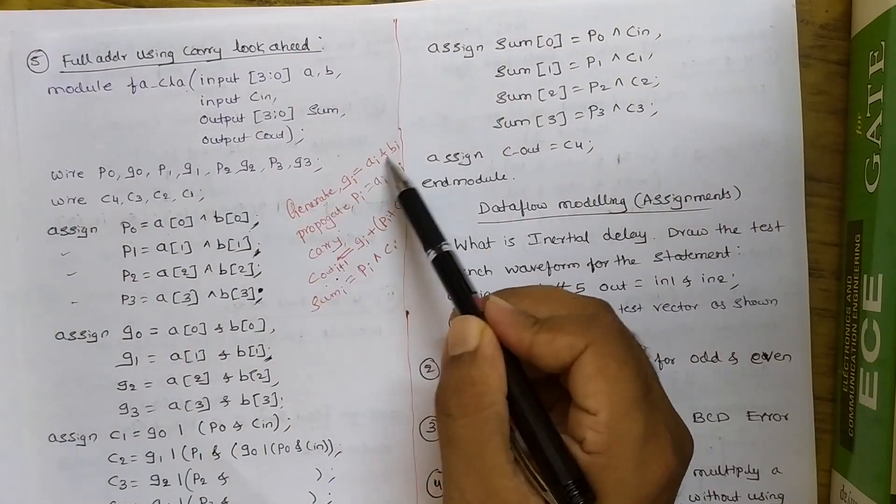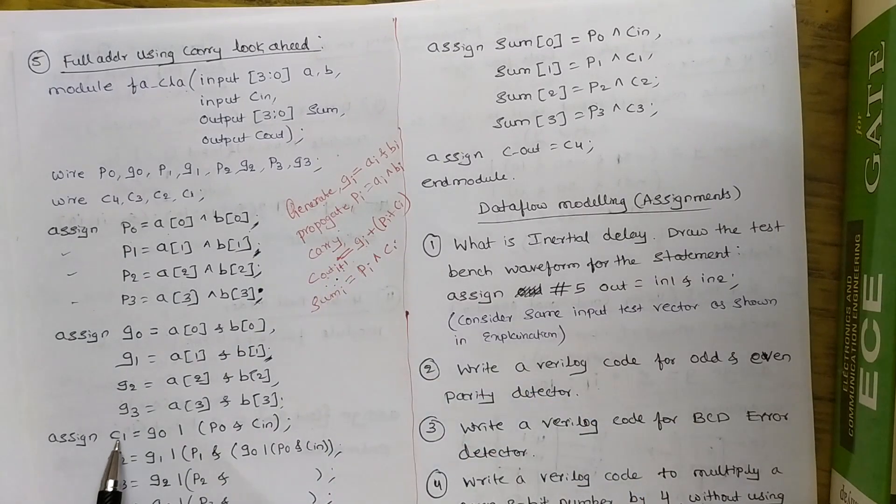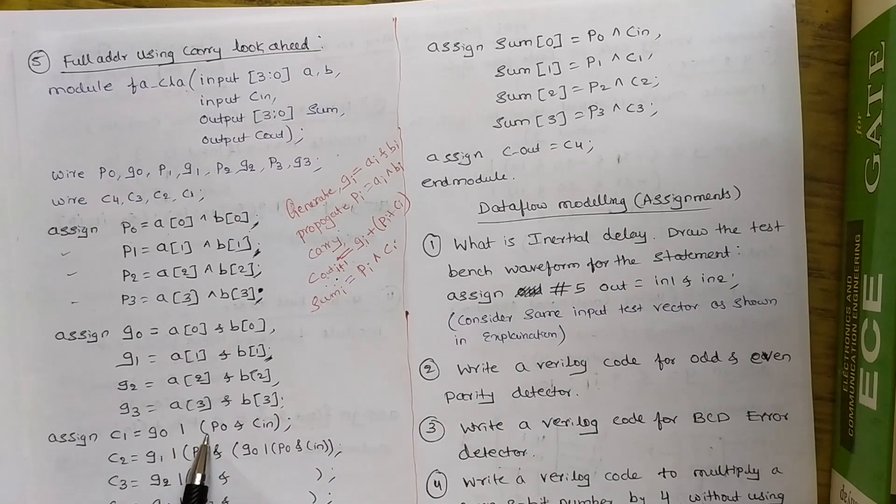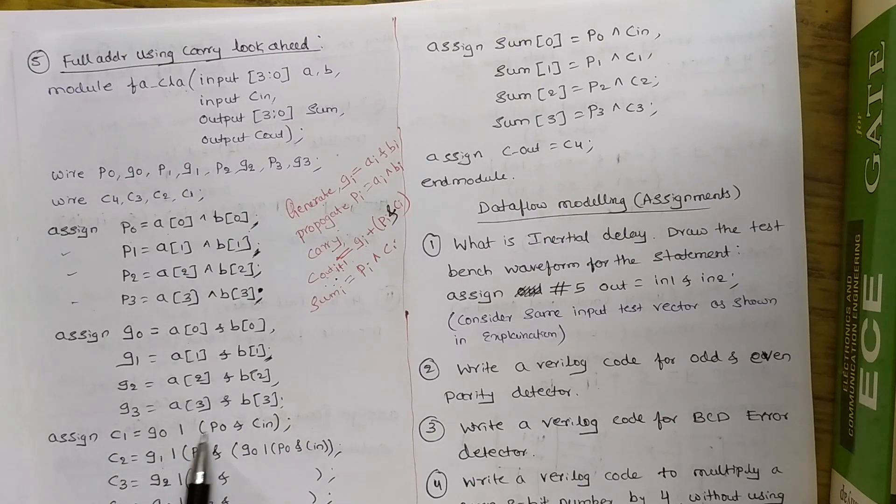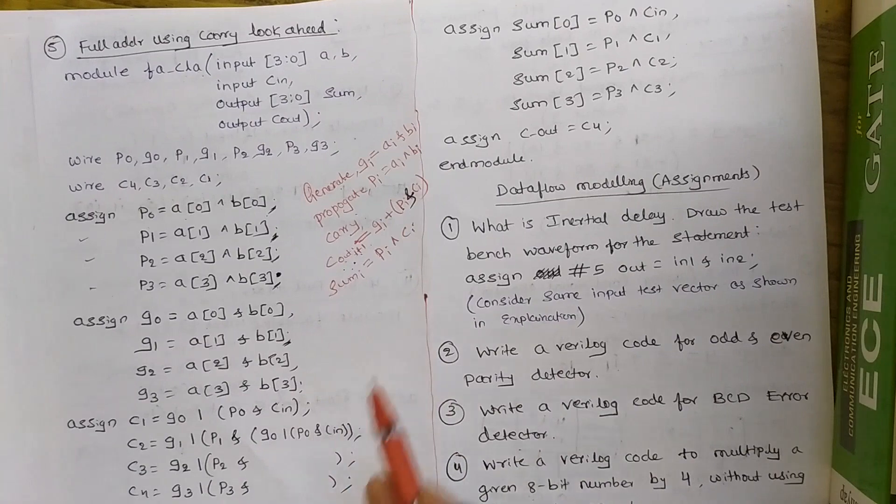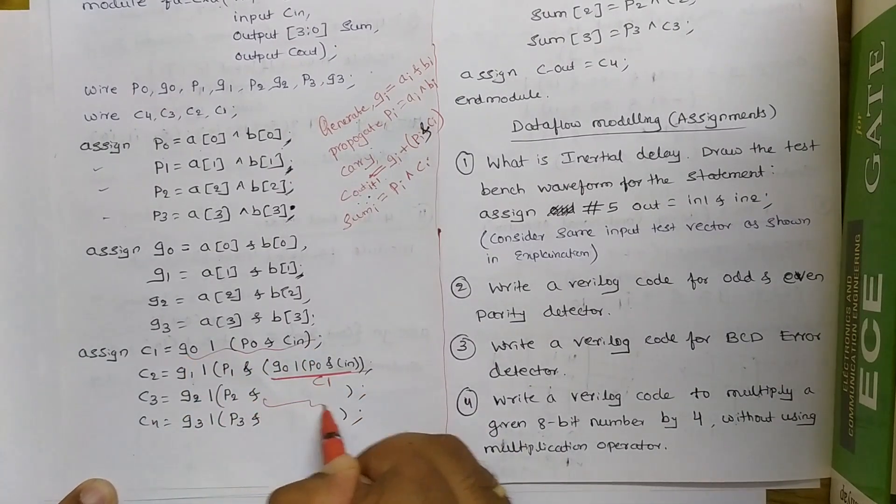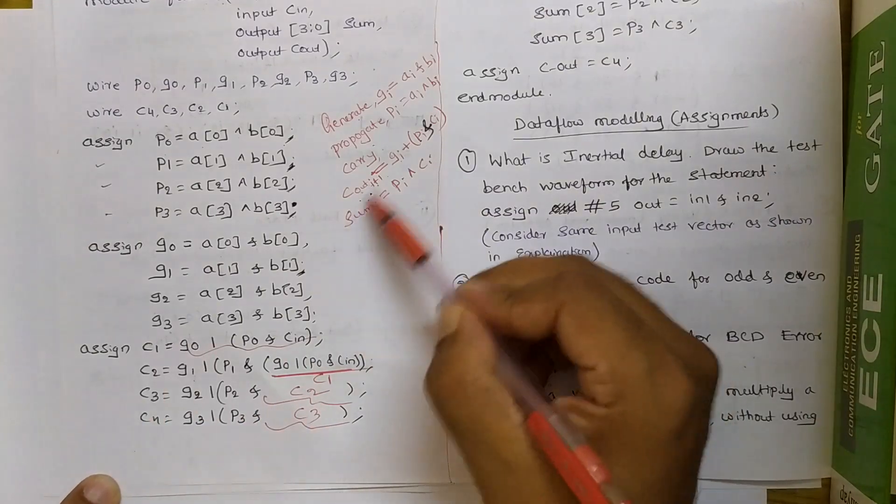Then comes to carry out expression. So carry out i plus 1. That is, I will not start with C0. C0 is considered as Cin itself. That's why I'll go for C1. C1 is equal to G0 ORed with P0 ampersand Cin. So C2 is G1. You just go on incrementing here. 1 to 2, 0 to 1. P0 to P1 and Cin considered to be C0 till C1. So whatever C1 I am having here. So this whole of the expression is C1. And this whole of the expression is C2. And this expression is C3. You can just write all these things by referring the generalized form.